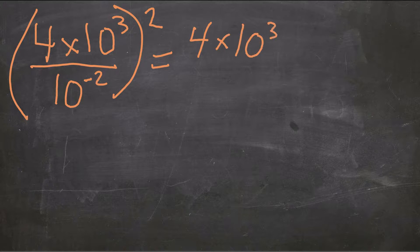So we get 4 times 10 to the power of 3 times now 10 to the power of 2. Moving it to that numerator makes that negative 2 positive. Now we've got everything to the power of 2.